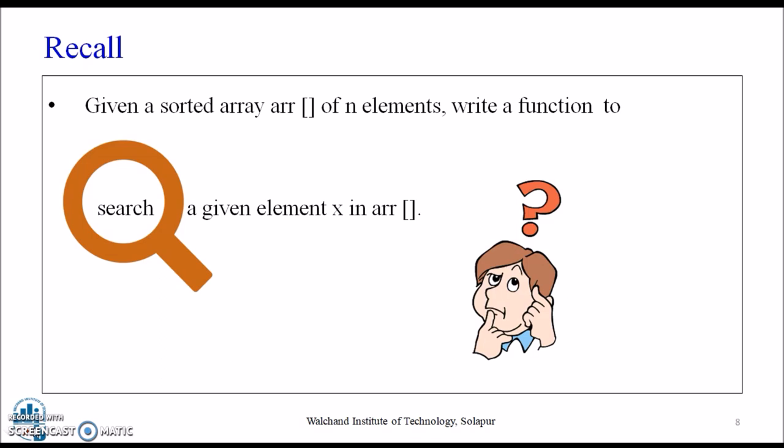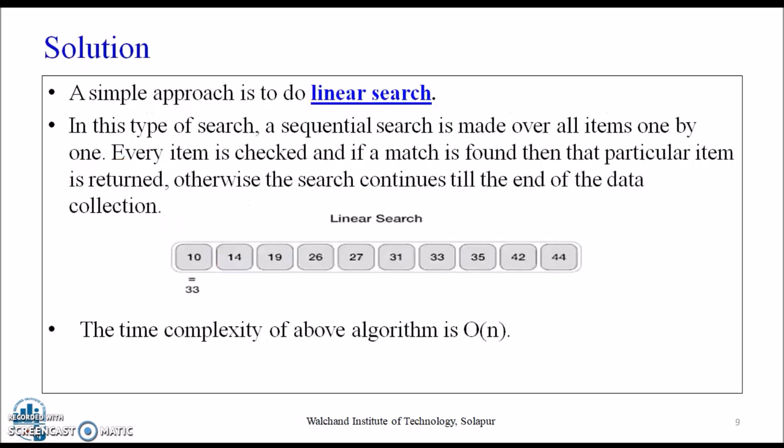So let's start with a simple approach, that is to do linear search. Linear search is basically a sequential search made all over the items one by one. Here every item is checked and if a match is found then the particular item is returned.